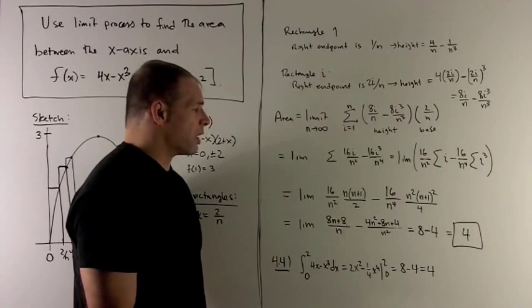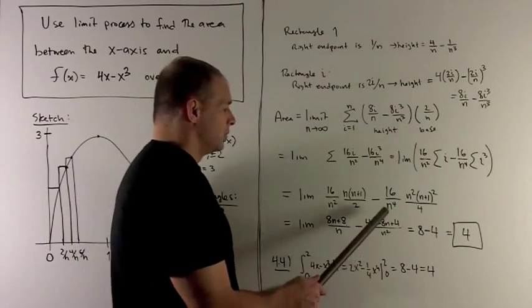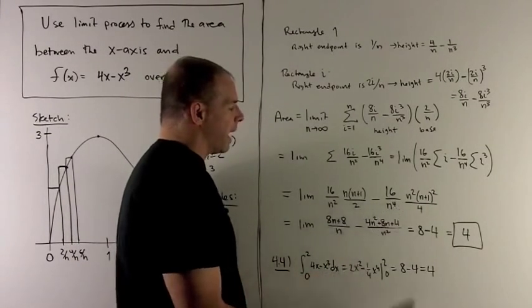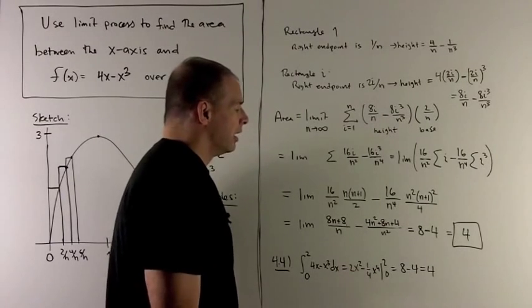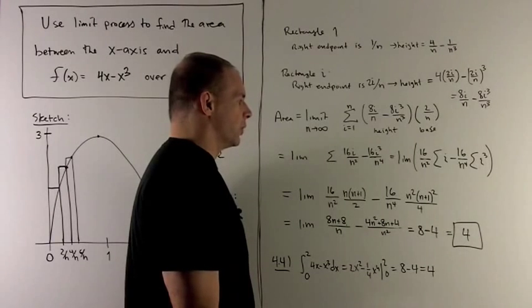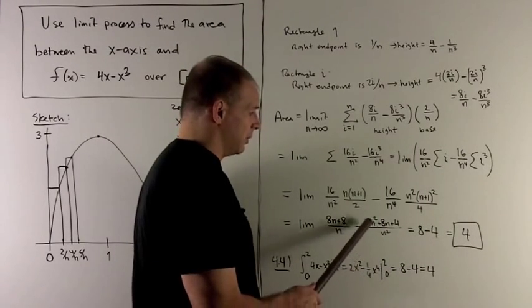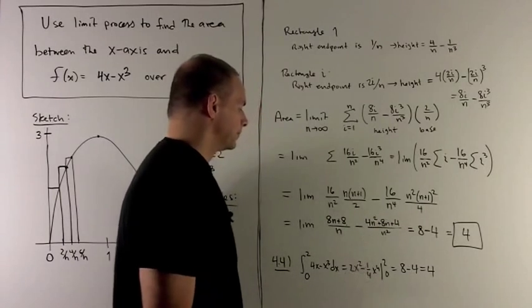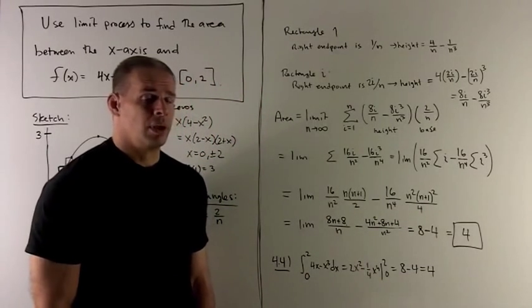For this term, the 16 and the 4 become a 4. We can kill 2, we can kill n squared in the bottom, bringing it down to n squared. And then if I expand the (n+1) squared, that's n squared plus 2n plus 1. Multiplying that by 4 leaves me with this here.